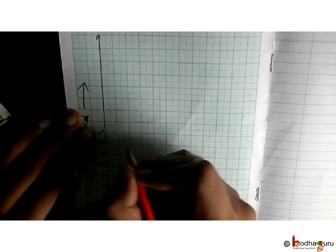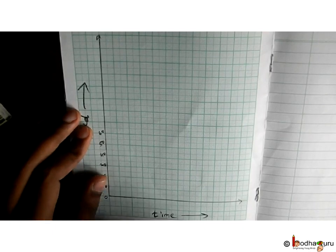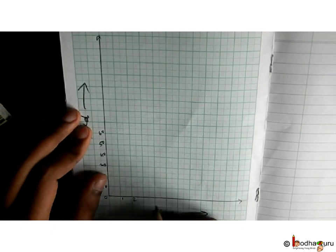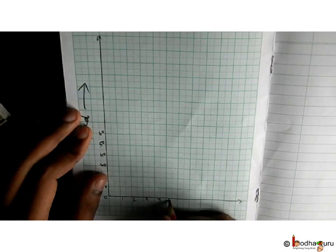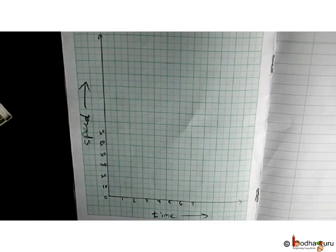Along the x-axis, we increase the value by 1 minute for 1 bigger square. Meaning, 1 unit is equal to 1 tenth of a minute as a side of a bigger square having 10 units. We did this because we have to go till 7 minutes only.